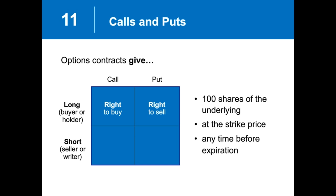Options officially cease to exist at 11:59 PM Eastern time on their expiration date, but you do not have until that time to communicate your instructions to your broker. On the short side, if you're selling a call option, you are paid the option premium and take on the obligation to sell shares of stock at a particular price for a specified time frame. If you've sold a put option, you're paid premium up front and are under the obligation to potentially buy shares of stock for a certain length of time.